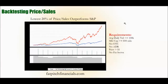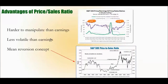The two biggest proponents of the price-to-sales ratio I've come across are Ken Fisher and James O'Shaughnessy. Both have done a lot of research — we've discussed O'Shaughnessy in one of our other videos. They like to combine price-to-sales with other metrics. A lot of this is experimenting and seeing what works for you, but there may be real truth here largely for the reasons we mentioned: it's harder to manipulate, less volatile, and mean reversion applies.